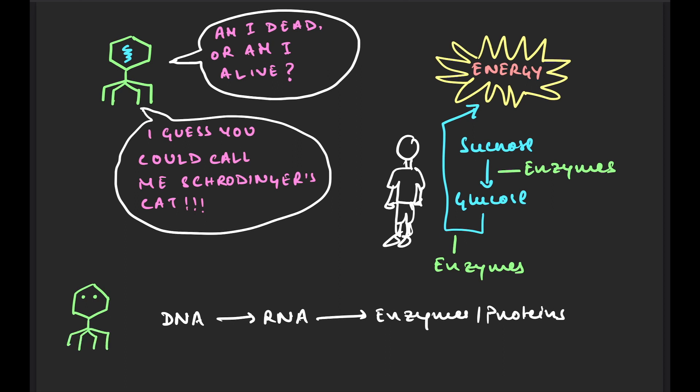However, once its DNA or RNA integrates with the DNA of a host, for example, a human, then it can have access to these enzymes by freeloading on the mechanism that the host uses to produce the enzymes.